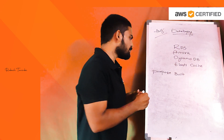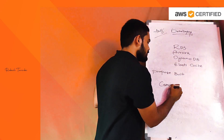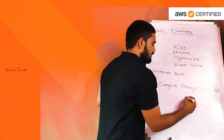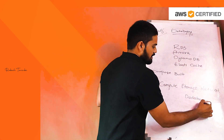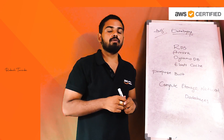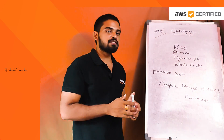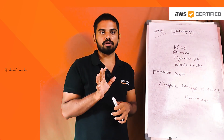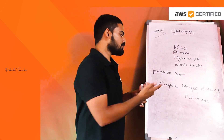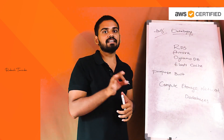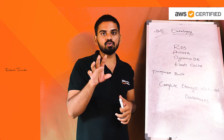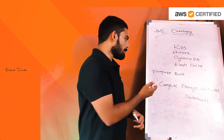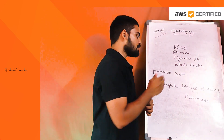There are four categories in AWS. One is compute, second one is storage, third one is networking, and fourth one is databases. We already have covered compute, storage, and network. So now we are covering the database category.